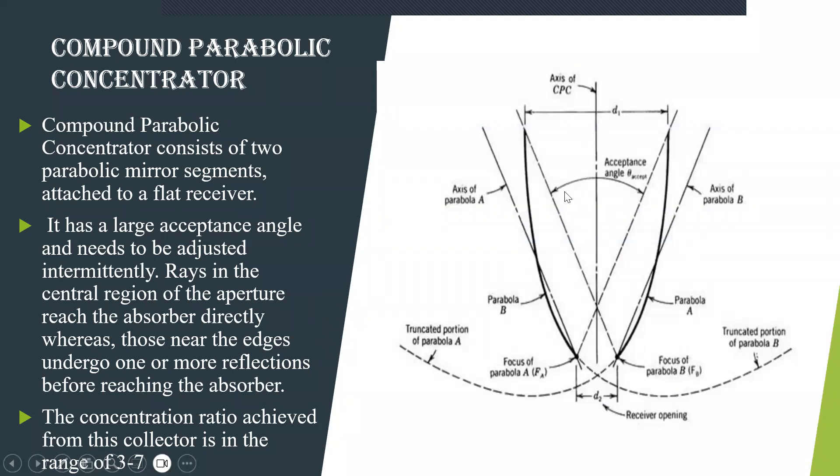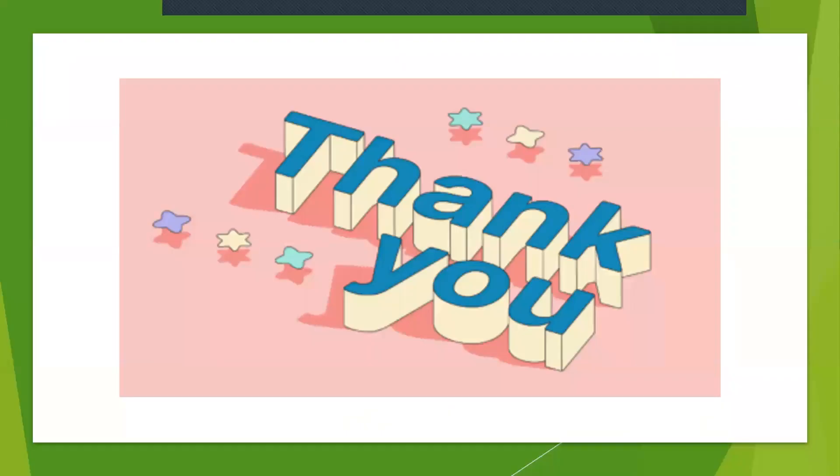That it will have a large acceptance angle where this acceptance angle can be adjusted. The rays in the central region of this aperture will reach the observer plate directly. There is no tilting of the mirror. It is directly going to hit the surface. Because of that the concentration ratio achieved because of compound parabolic concentrator is around 3 to 7. Hope you have understood all these kinds of concentrator collectors that is available. There are more concentrators. I have just given you some examples of the concentrators collectors available. Thank you. Stay tuned for more information.